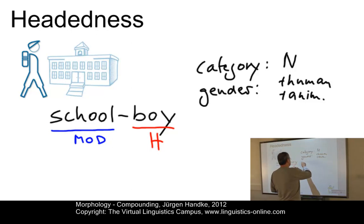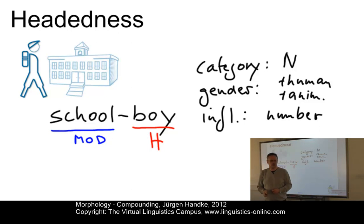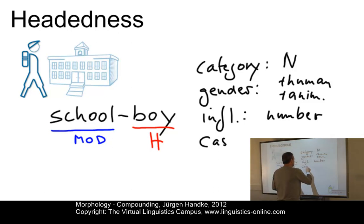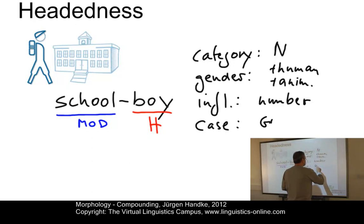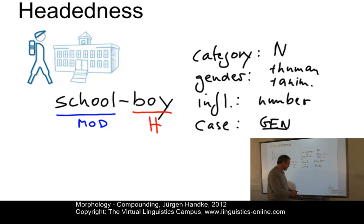So boy must be the head. The head also takes the inflectional properties — for example, number. If you want to turn the compound schoolboy into the plural, you have schoolboys: you attach the suffix for the plural at the head and don't add it to the modifier. And finally, in syntax, it is case. For example, the genitive case in present-day English would be 'the schoolboy's best friend.'